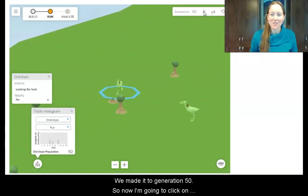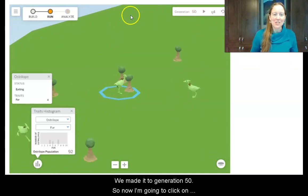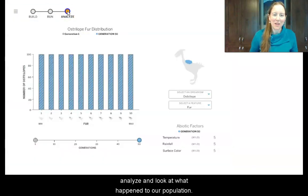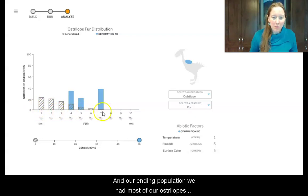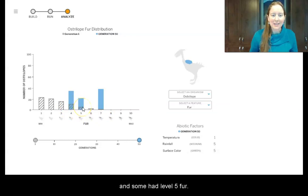Alright, we made it to generation 50. So now I'm going to click on analyze and look at what happened to our population. So you can see our starting population is represented by these bars in our histogram with stripes. And the ending population, you can see, is this blue color. So you can see we started with variations 1 through 7. And our ending population had most of our Australopes with level 7 fur. However, many of them had level 4, and some of them had level 5.